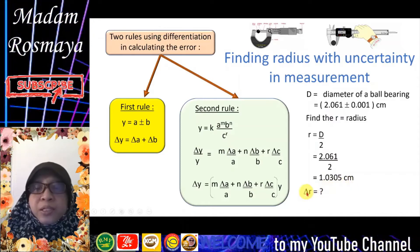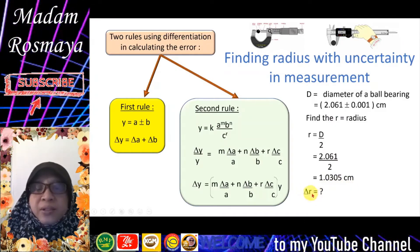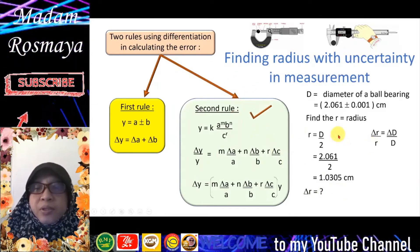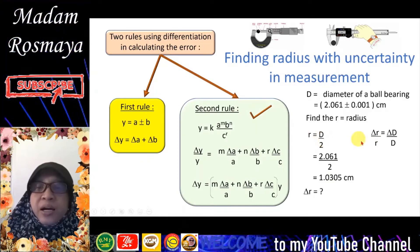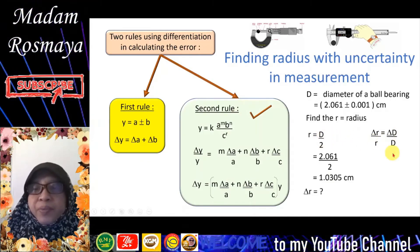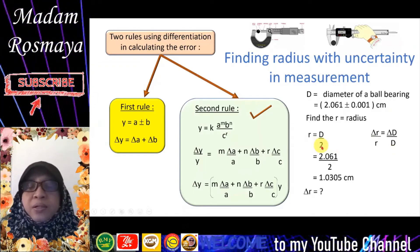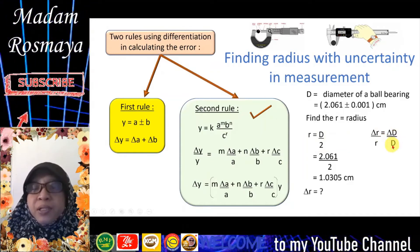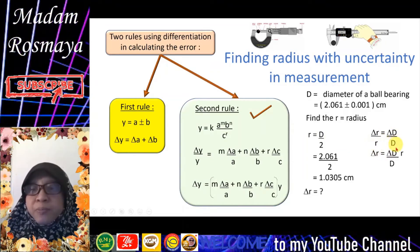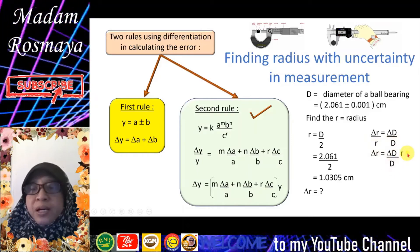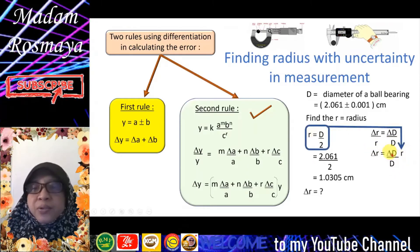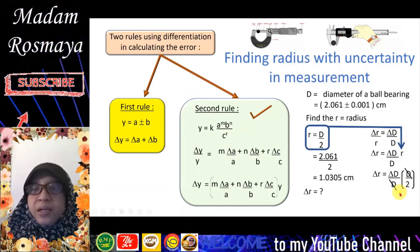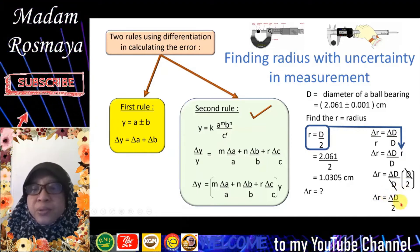Now to determine the uncertainty Δr, we use the second rule because this involves division. So Δr/r = Δd/d. The 2 is a numerical value, so no need to write it. Only Δd/d. We cross multiply: Δr = (Δd/d) × r. Then we substitute r into here, so d/2. Cancel the d, and we get Δr = Δd/2.